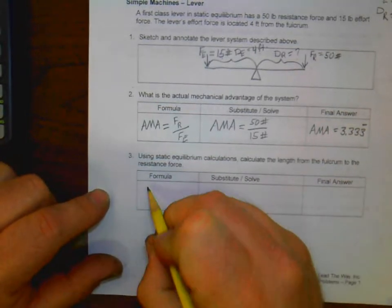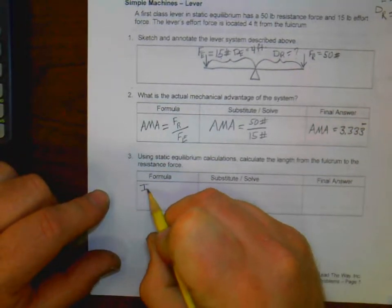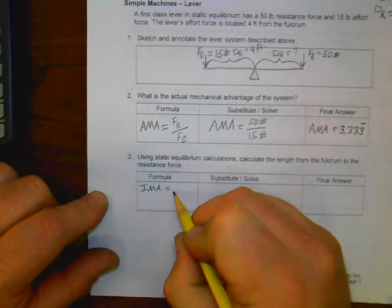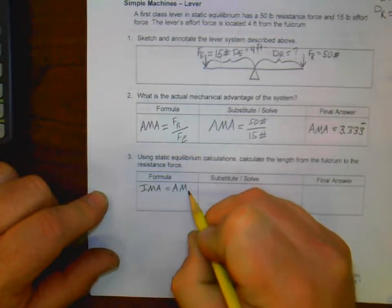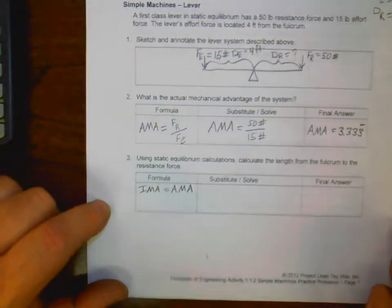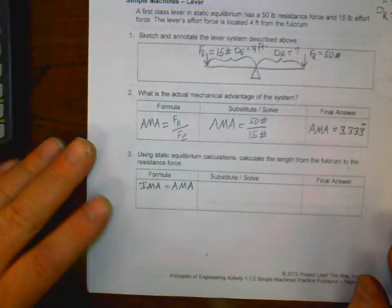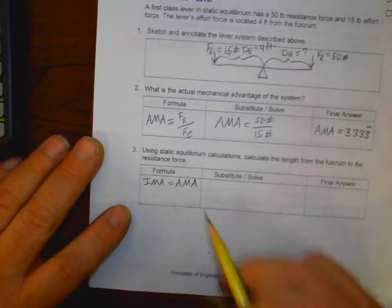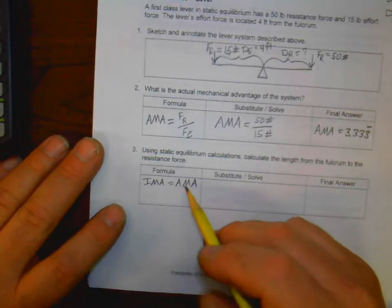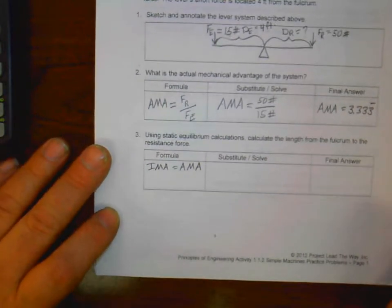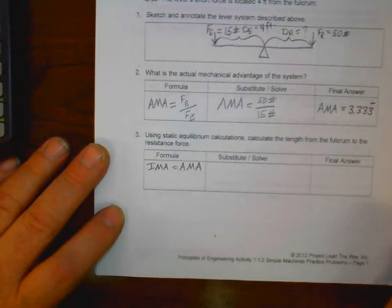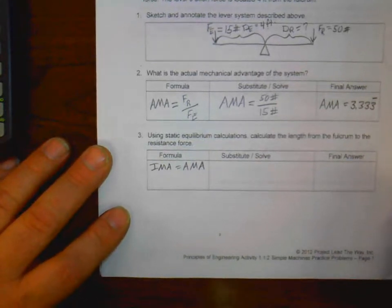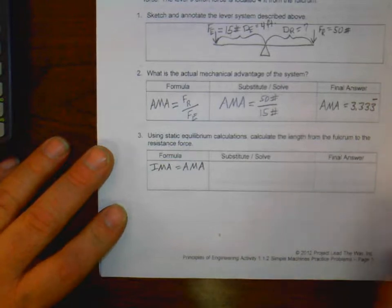In reality and in the real world, we know that this is never going to exist. The ideal mechanical is never going to be the same as the actual, but we're assuming static equilibrium here. So we're going to set them the same so that we can figure out what these should be and how to get the number. Now, with that, we will then take and substitute. If you remember, IMA equals DE over DR, and AMA, of course, was FR over FE.